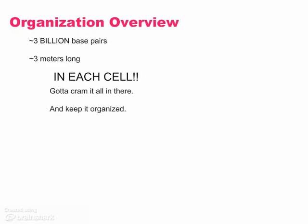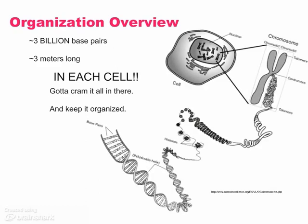Not only that, we have to keep it organized so that we can, when we go through cell division, each one of those cells will get a complete set of all of that information. That's a lot of information. So let's look over how this stuff is crammed into each cell.